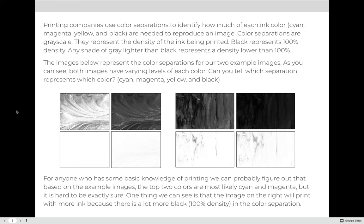Printing companies use something called color separations to identify how much of each ink color — cyan, magenta, yellow, and black — is needed to reproduce an image. Color separations are viewed in grayscale; they represent the density of the ink that is going to be printed. When you see black, that represents 100% density of whatever color that is, and any shade of gray lighter than black represents some density lower than 100%. The images below represent the color separations for our two example images.